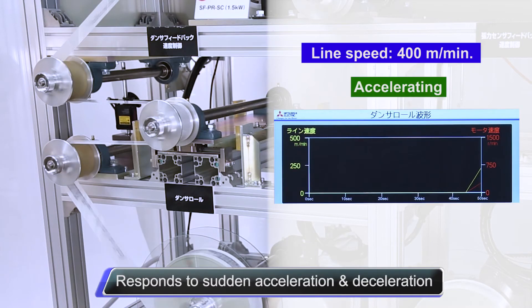The dancer roll operates stably even if it is repeatedly decelerated, stopped, and or accelerated.